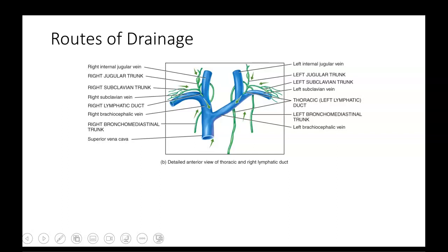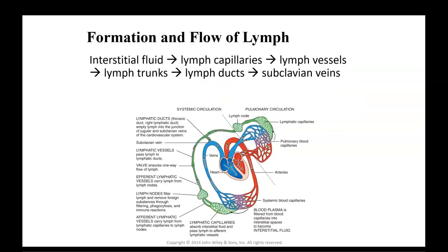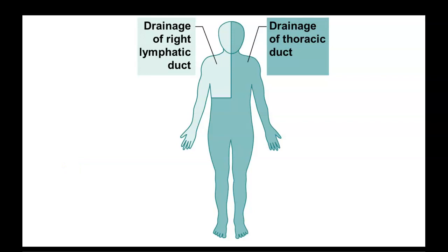Here's another visual showing these two drainages or routes that come into the venous system. The formation and flow of lymph goes from interstitial fluid to the lymphatic capillaries, then to the lymph vessels, then to the lymph trunks, lymph ducts, and finally the subclavian veins. The right lymphatic duct drains a little less than one-fourth of the body's drainage back into the venous system, while the thoracic duct gets a little more than three-fourths.